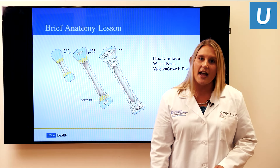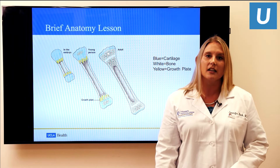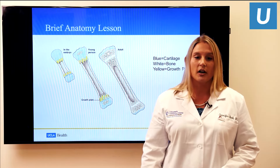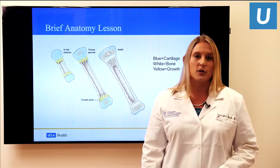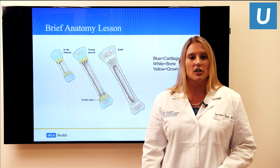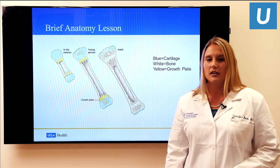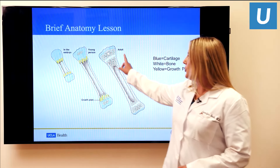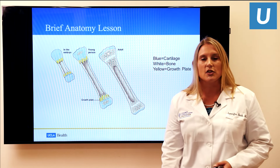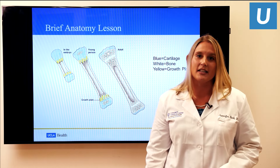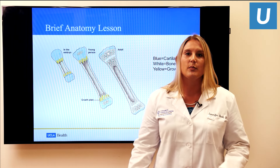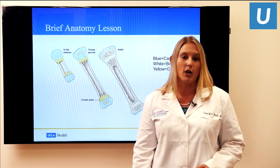A brief anatomy lesson on the difference between pediatric or skeletally immature patients versus adults who are skeletally mature. As we grow, bone forms from the central portion of the bone and there's cartilage on the ends. The blue portion at the ends of the bones is cartilage. The yellow portion is the growth plate, also called the physis or epiphyseal plate — the area that allows bones to grow and get longer.